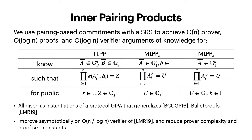In this work we use pairing-based commitments with a structured reference string to achieve linear time prover and log time proof and verifier arguments of knowledge for several relations. First, we have TIP where we have a vector of G1 and a vector of G2 elements for a pairing-friendly elliptic curve equipped with a bilinear pairing, and we show that the inner pairing product of these witness vectors is equal to some public value Z. Not shown here is that we first have a commitment to these A and B vectors.